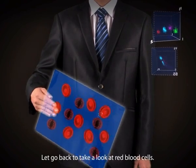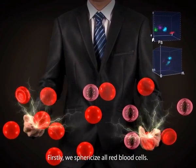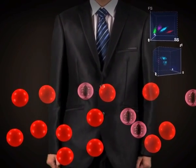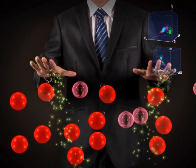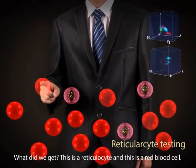Let's go back and take a look at red blood cells. Firstly, we sphericize all red blood cells. What did we get? This is a reticulocyte, and this, red blood cell.